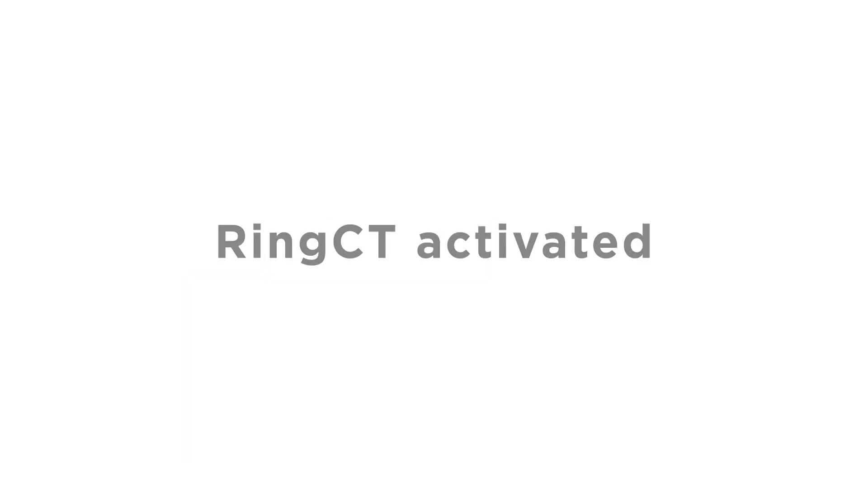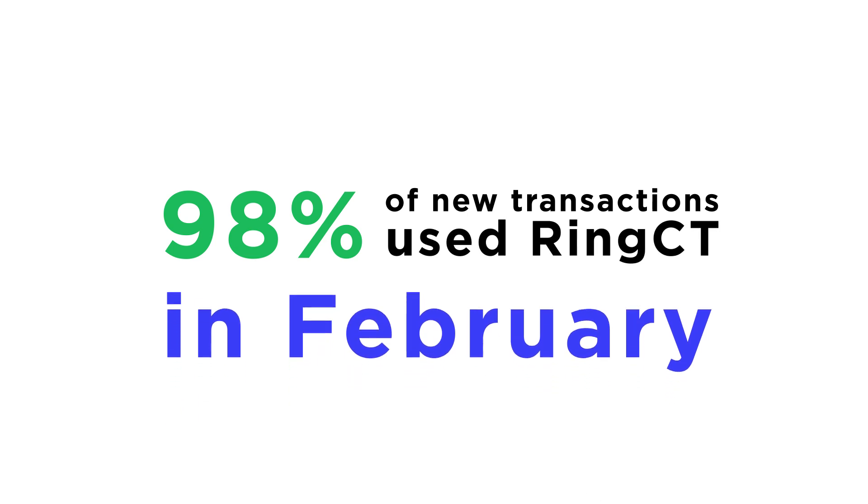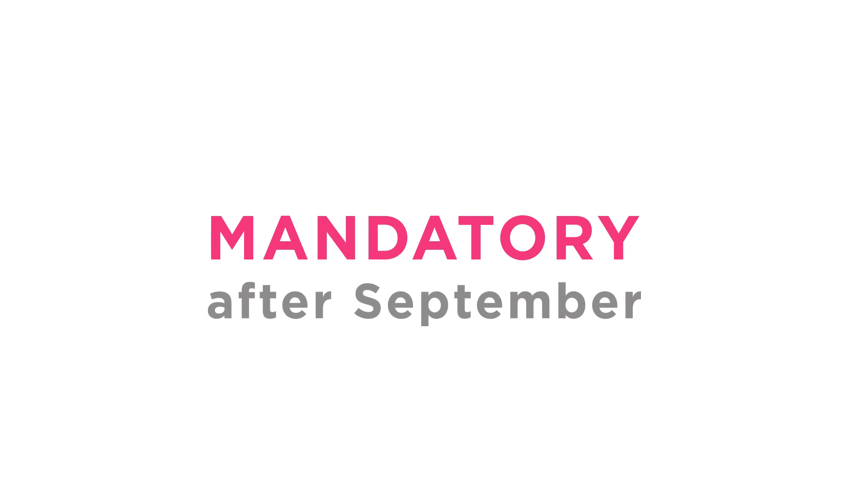To address this shortcoming, Monero activated Ring CT in January 2017. Ring CT prevents privacy leaks by hiding transaction amounts in the blockchain. A month after Ring CT was activated, approximately 98% of new transactions were using the Ring CT protocol. After September 2017, the use of Ring CT will be mandatory for all Monero transactions.